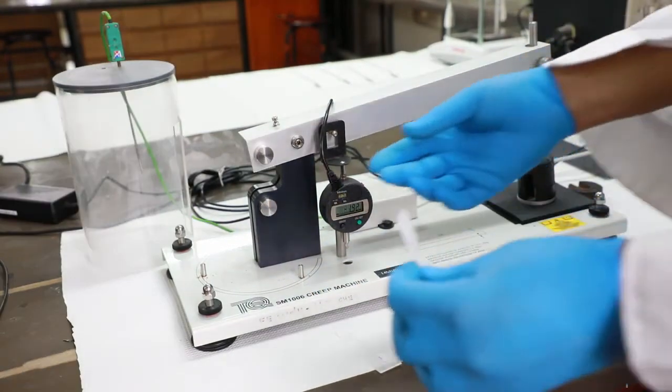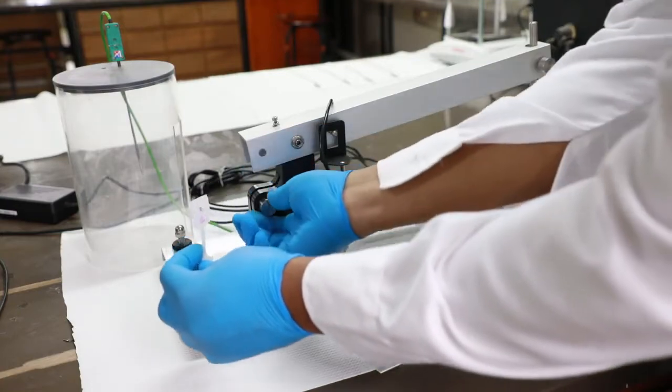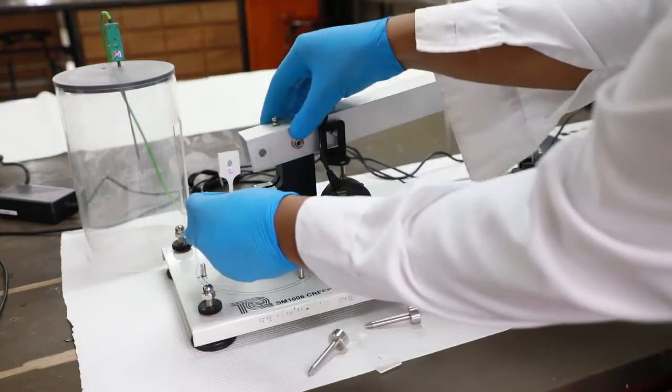Place sample number two vertically into the creep apparatus and secure with two pins whilst holding the lever arm.